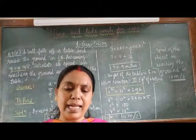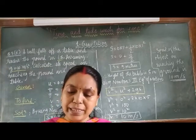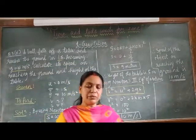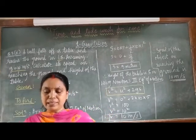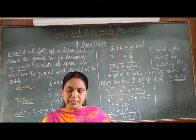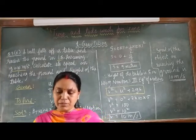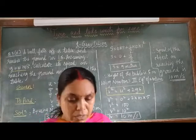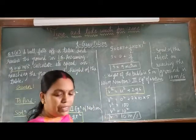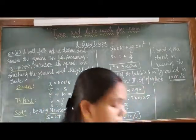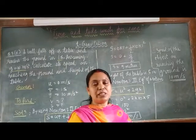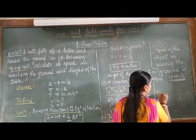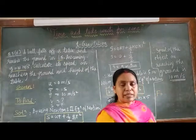The mass of the earth and moon are 6 into 10 raise to 24 kg and 7.4 into 10 raise to 22 kg respectively. The distance between them is 3.84 into 10 raise to 5 km. So, you can calculate the gravitational force of attraction between the two. Here, you will use the direct substitution in the formula. That is, force of gravity.